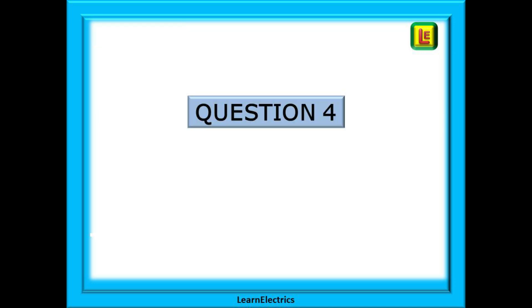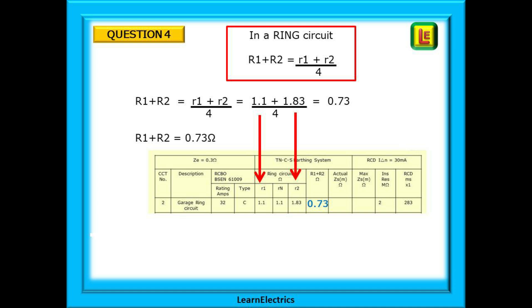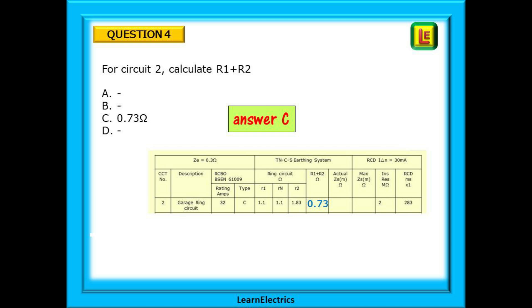Moving to question 4 now. You are simply asked for circuit 2, calculate R1 plus R2. Pause the video again and answer the question. This is a ring circuit again. Little R1 and little R2 are shown in the chart. Add them together and divide by 4. Our answer is 0.73 ohms and that's it. Our answer should be C. R1 plus R2 is 0.73 ohms.